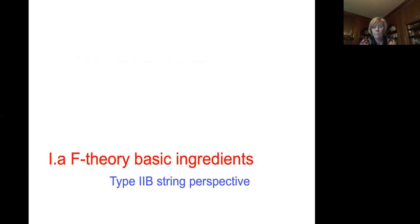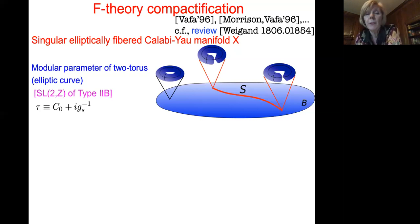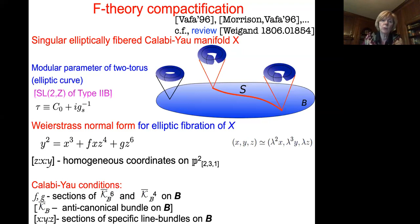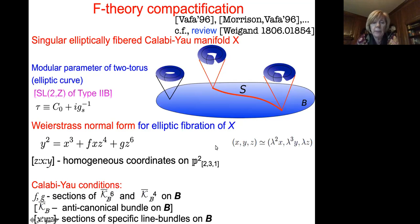The key feature of F-theory compactification is the study of singular elliptically-fibered Calabi-Yau manifolds where the elliptic fibration — the torus — has a modular parameter that parameterizes the strength of the string coupling. The standard prototype is parameterized by a Weierstrass normal form, associated with the elliptic curve that is a hypersurface constraint in a specific weighted projective space, P^{2,3,1}.